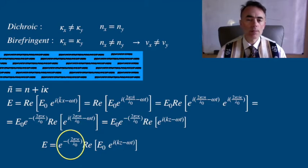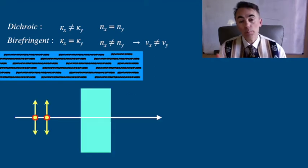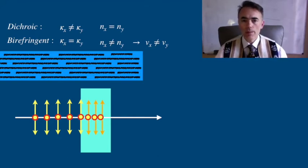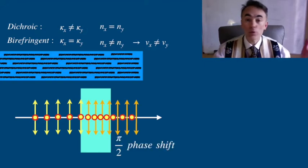This means that the horizontal component of unpolarized light travels at one speed while the vertical component will travel at a different speed. This way depending on the thickness of the material we can obtain a π over 2 phase shift, for example, at the end of the material.